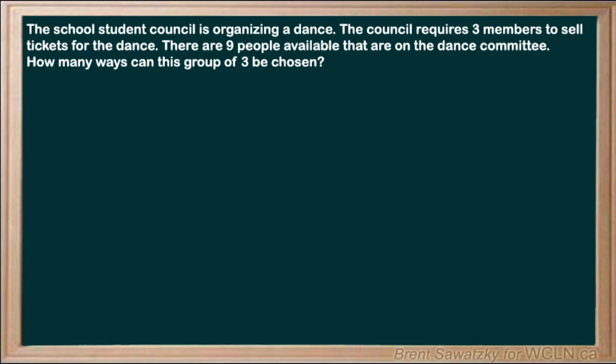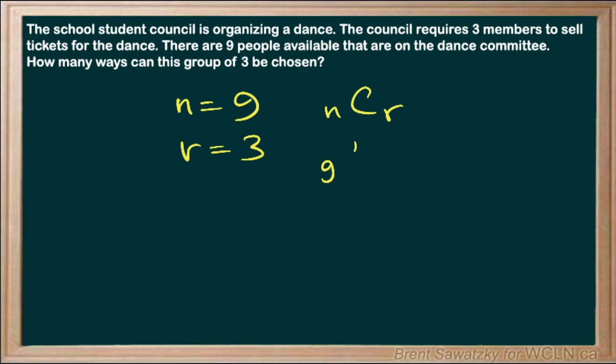So let's take a look at it from that point of view. In a combination situation, n equals nine — we have nine people to choose from — and we're making a group of three. Instead of saying nPr, we say nCr. It's a combination. We have nine people to choose from and we're choosing three, and it doesn't matter what order we choose them in. We should have fewer combinations because the different orders don't matter; they would be considered the same.